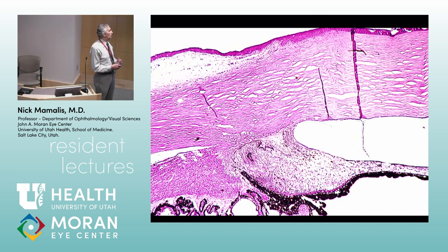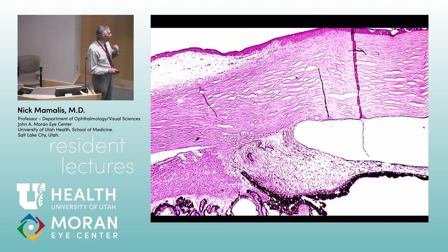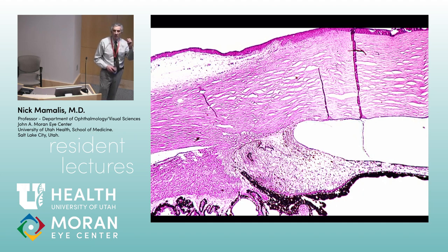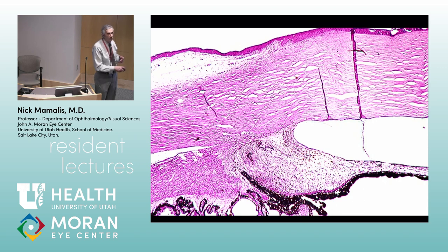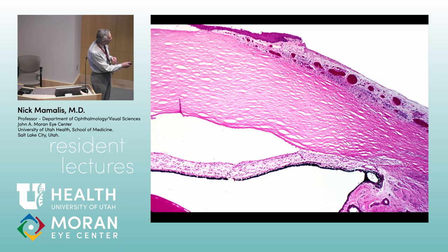Here's another entity associated with closed angle. The angle looks scarred down — that's a sign of peripheral anterior synechiae. Here's the trabecular meshwork and this scarred angle. Synechiae means sticking together of two things. This is called peripheral anterior synechiae, or PAS. It can be caused by chronic angle closure, but also chronic uveitis or chronic inflammation — anything that can stir things up can give you this synechiae, which causes secondary angle closure.